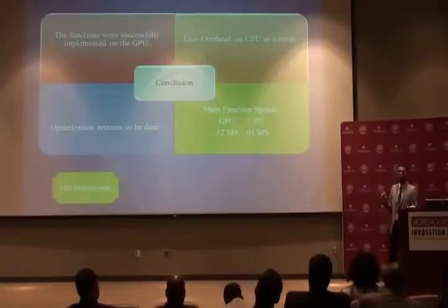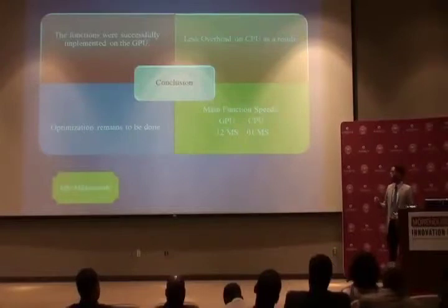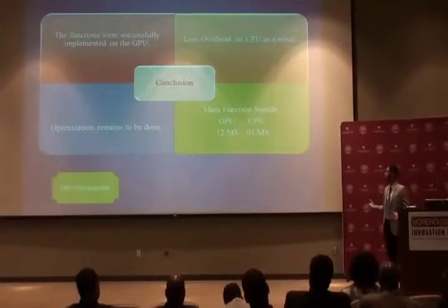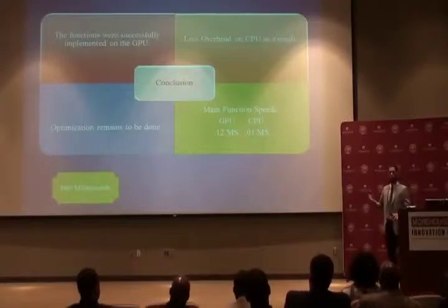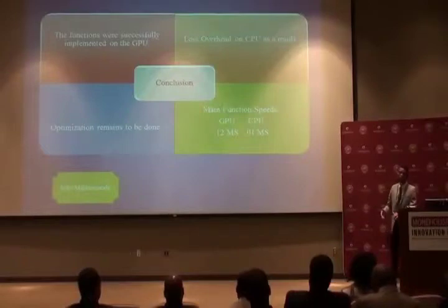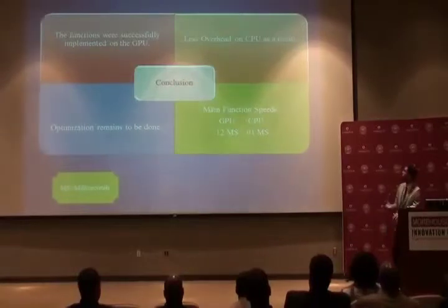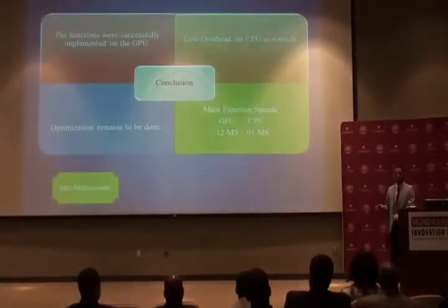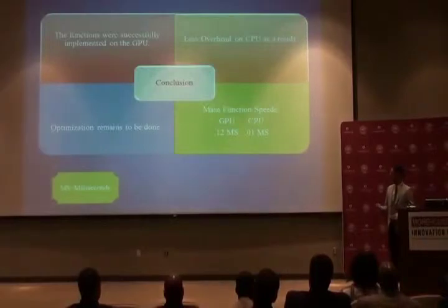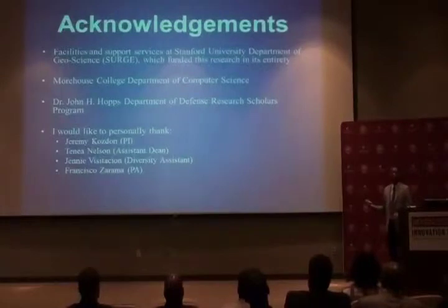We created time functions to wrap around the program to see how different aspects were running. For the GPU, the main function was running at 0.12 milliseconds, whereas the CPU was 0.01 milliseconds — significantly faster for the CPU at this stage — but with continued optimization the GPU would be significantly faster. As a result, there was less overhead on the CPU because the GPU was integrated. My project remains unfinished, but this represents what has been done.